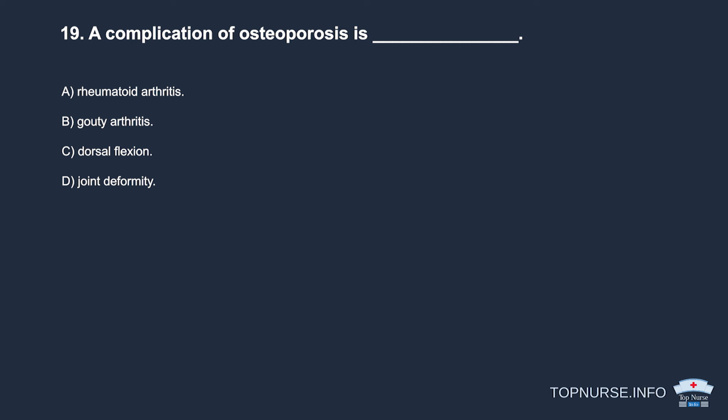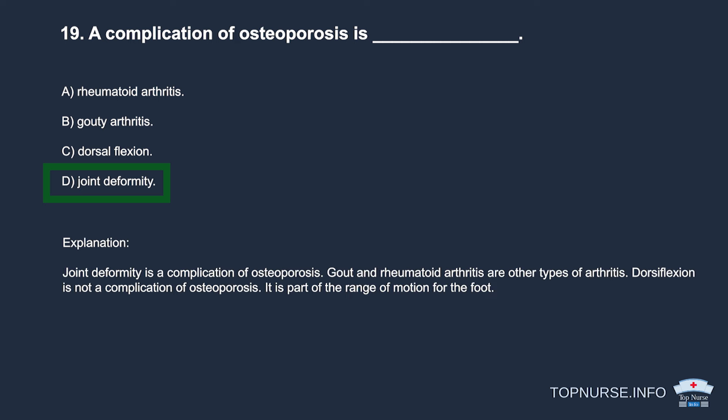Question 19: A complication of osteoporosis is: a. Rheumatoid arthritis. b. Gouty arthritis. c. Dorsal flexion. d. Joint deformity. Correct answer: d. Joint deformity. Gout and rheumatoid arthritis are other types of arthritis. Dorsal flexion is not a complication of osteoporosis — it is part of the range of motion for the foot.